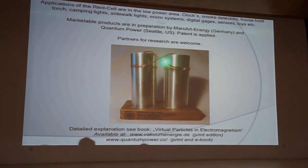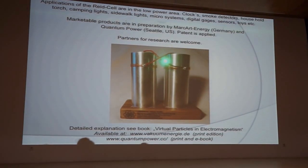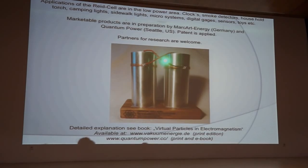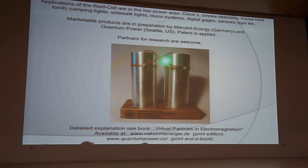Yeah I'm coming to the end the applications of the read cell are in the low power area like clocks smoke detectors household torch camping lights sidewalk lights microsystems digital gauges sensors toys and whatever. Marketable products are in preparation by mark out energy in germany and quantum power in seattle my partner from seattle mark kuthbert is here in the audience as well. Yeah partners for research are welcome. What you see here on the picture are two cells they are put in series to increase the voltage to three volt because the led needs about two and a half volt to jumpstart.